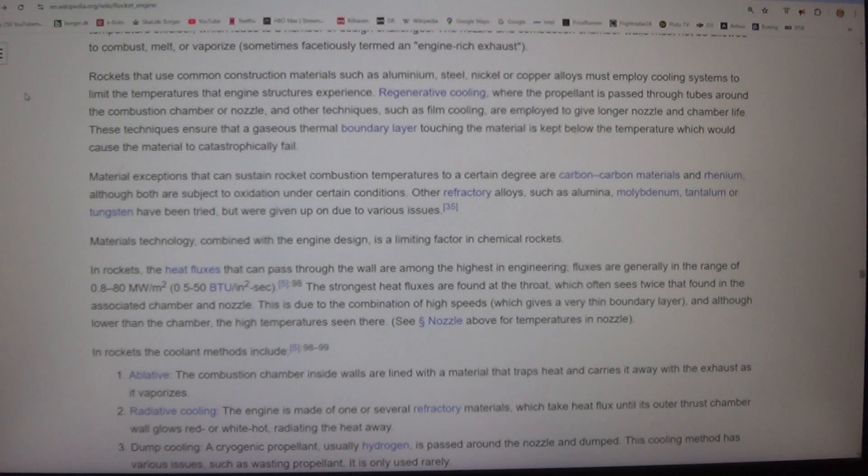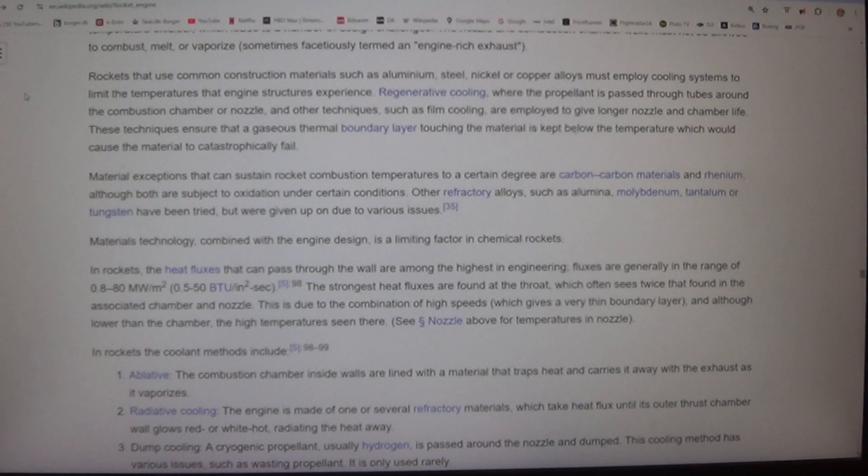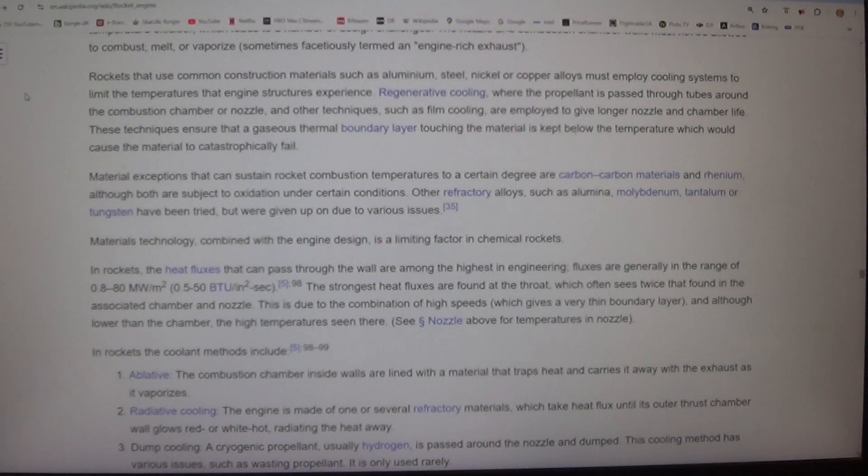Regenerative cooling, where the propellant is passed through tubes around the combustion chamber or nozzle, and other techniques such as film cooling, are employed to give longer nozzle and chamber life. These techniques ensure that a gaseous thermal boundary layer touching the material is kept below the temperature which would cause the material to catastrophically fail.